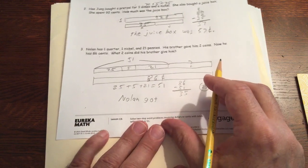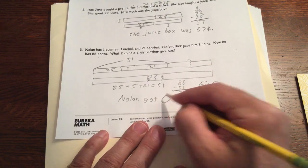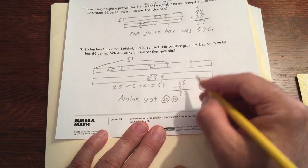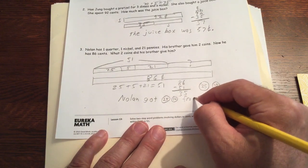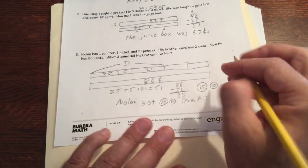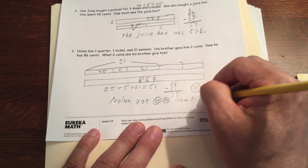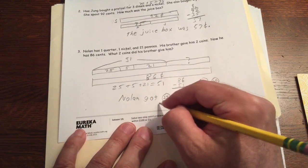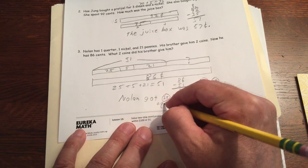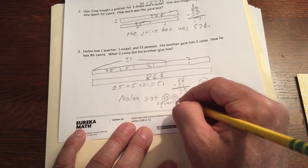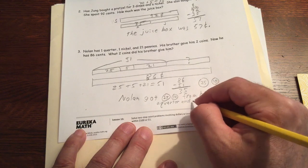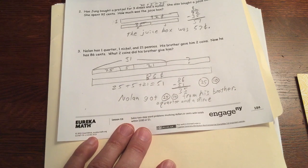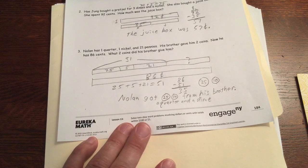And your answer is, Nolan got, and if you don't know how to write it out you can just draw a picture of it, from his brother. And if you want to write it out you can spell, a quarter and a dime. And don't forget to look for page two.